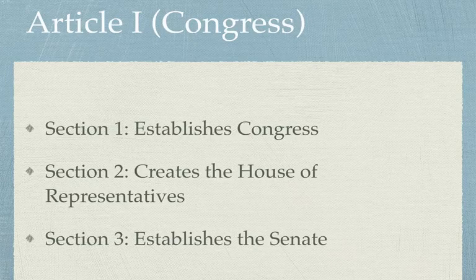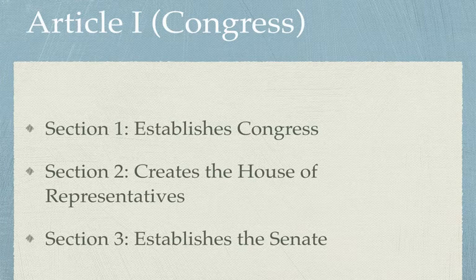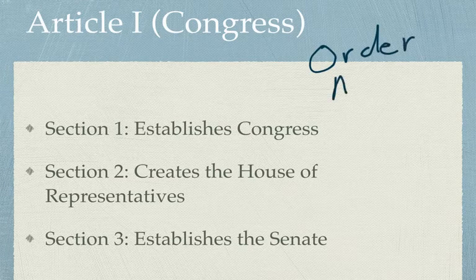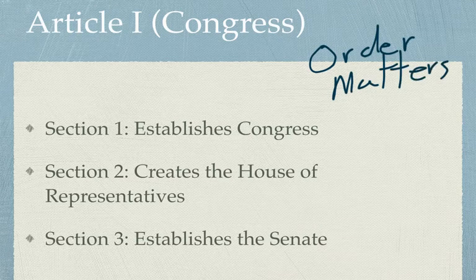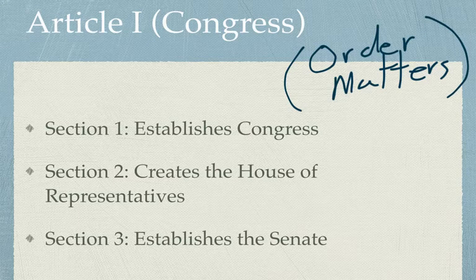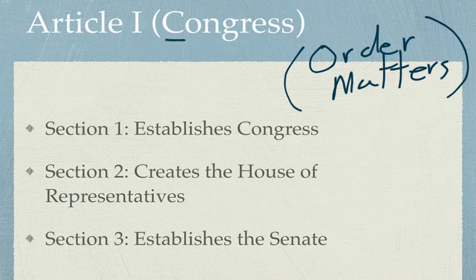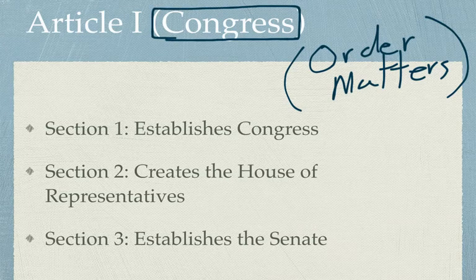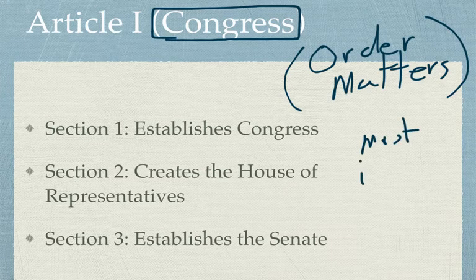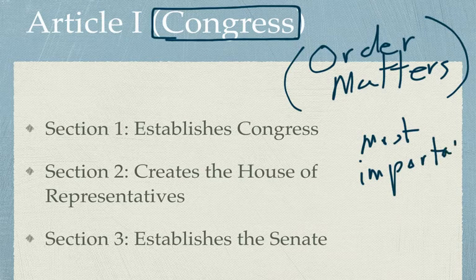The first thing we need to understand is that the order of the Constitution is important. The framers actually started with the things they themselves thought were the most important and moved forward. You can see this in the length as well — the early articles are going to be long. Article 1 is one of the longest in the entire Constitution, and it deals with the thing that most members of Congress thought was key: Congress itself. The framers considered Congress the most important of the branches.